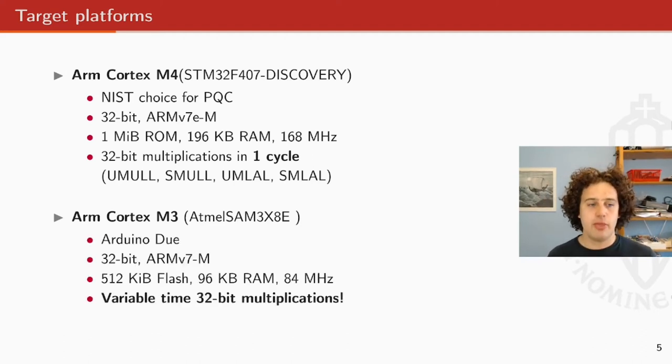The ARM Cortex M3. So we used an Arduino Due, which has an Atmel SAM3X8E chip. It looks a lot like the M4, but the main difference is that the flash size and the ROM size are a lot lower. And on the M3, there are not these nice multiplications that multiply in one cycle. It has the same instructions, but they have variable runtime, which means that we cannot use them for side-channel-resistant code.